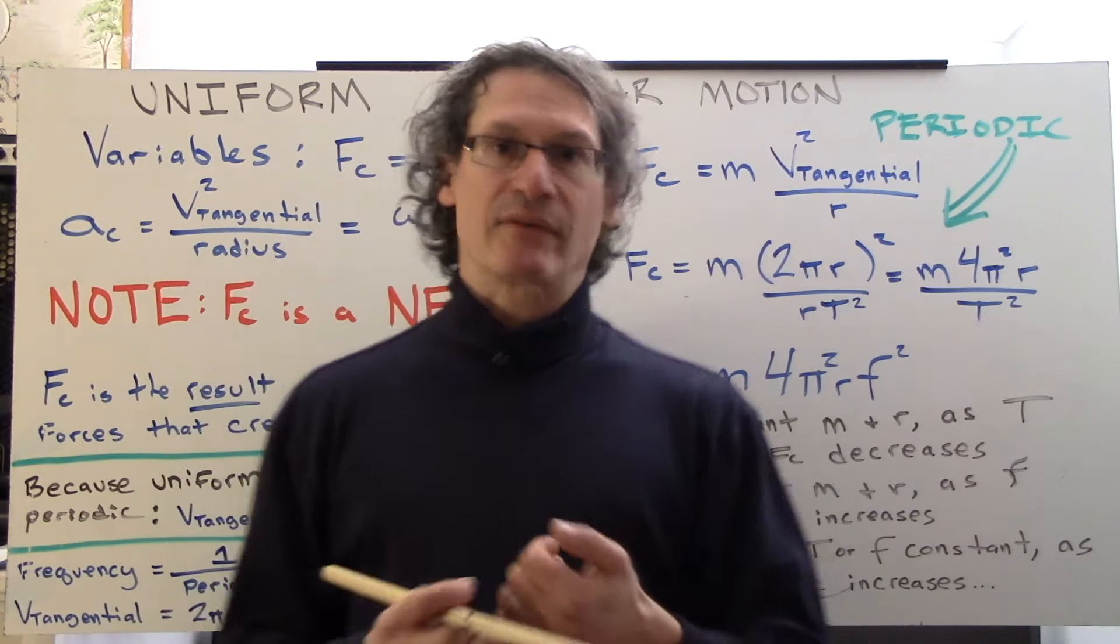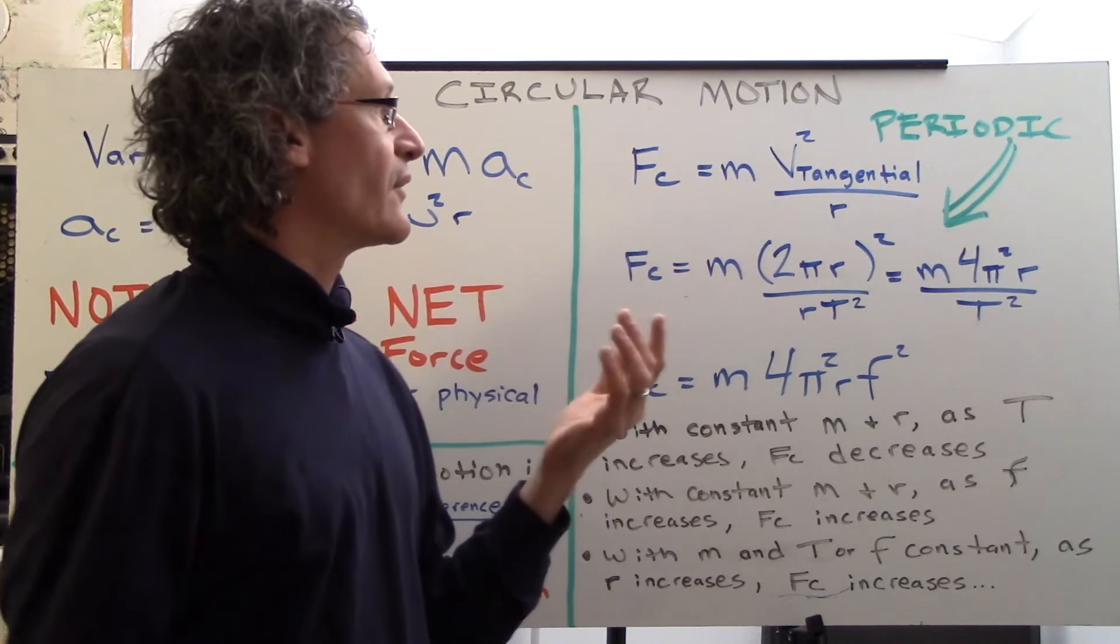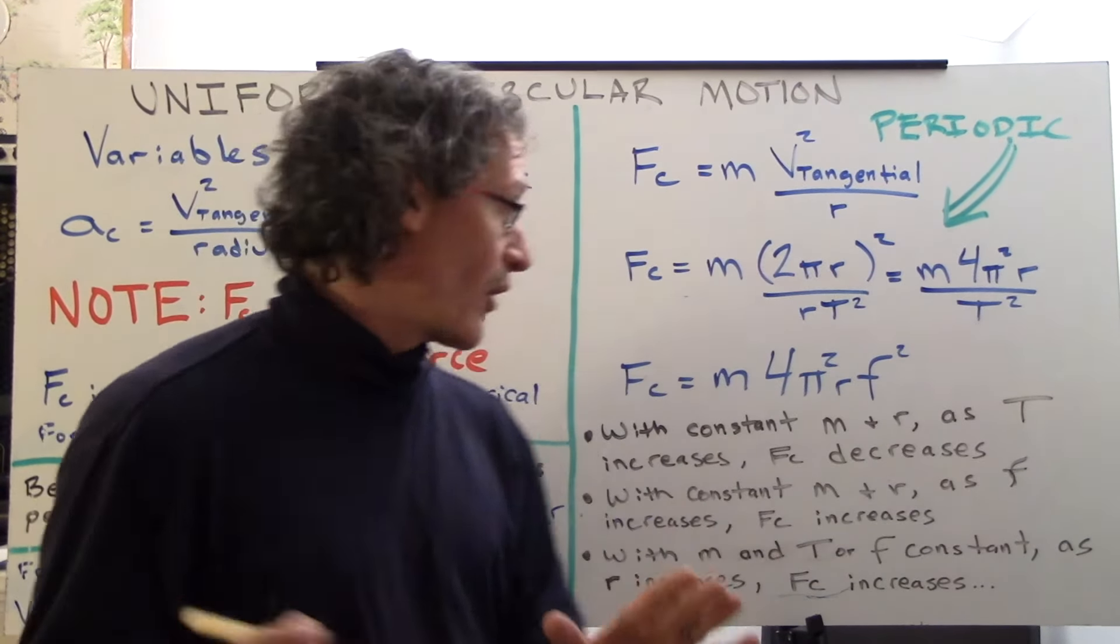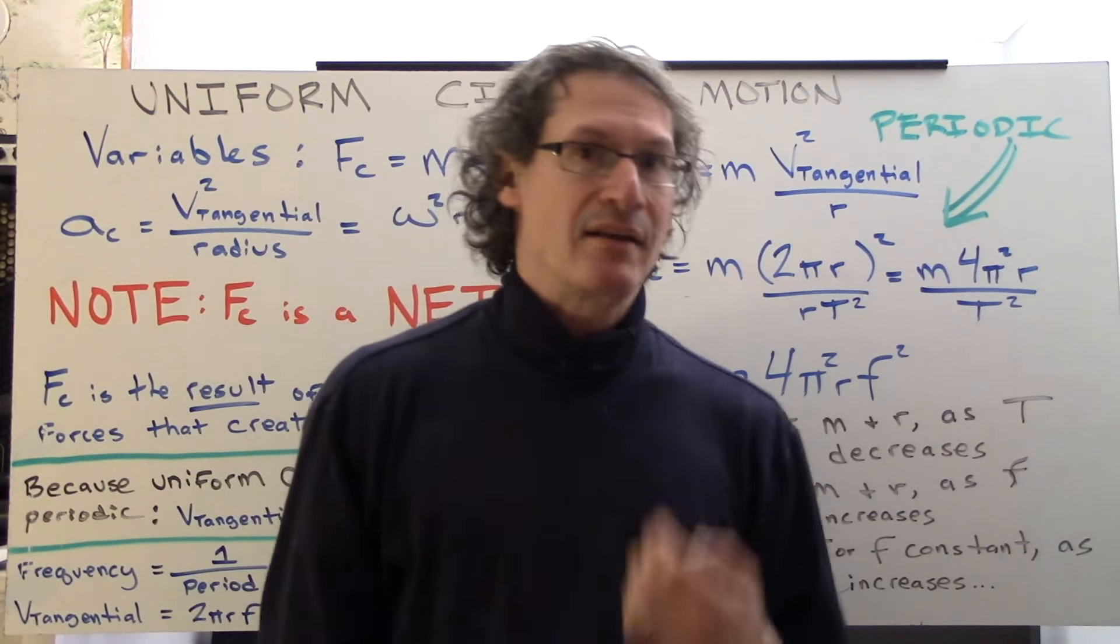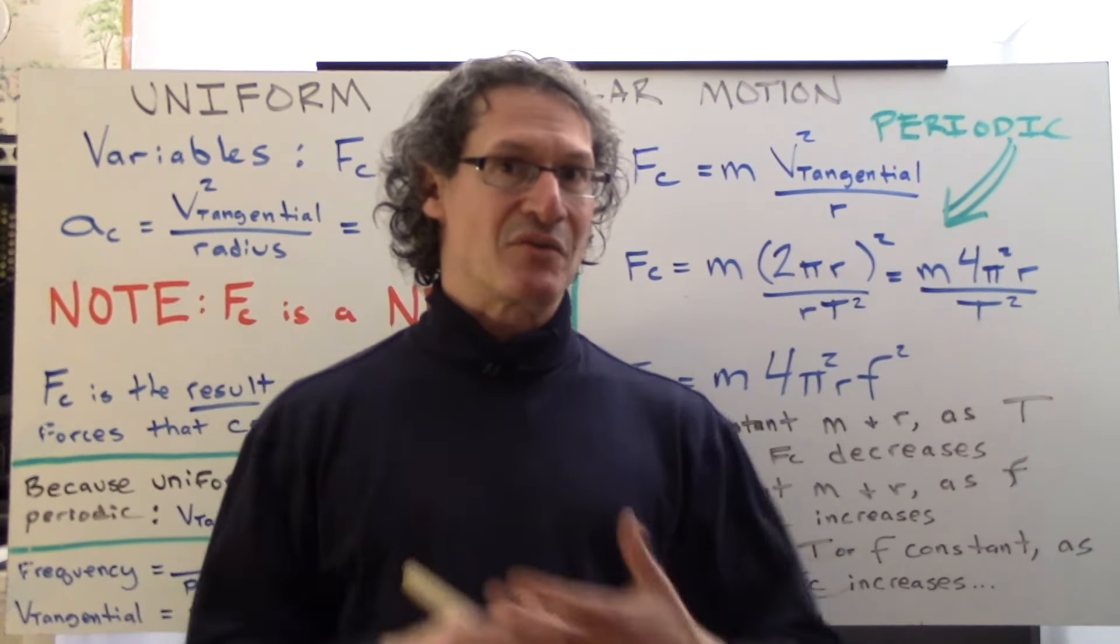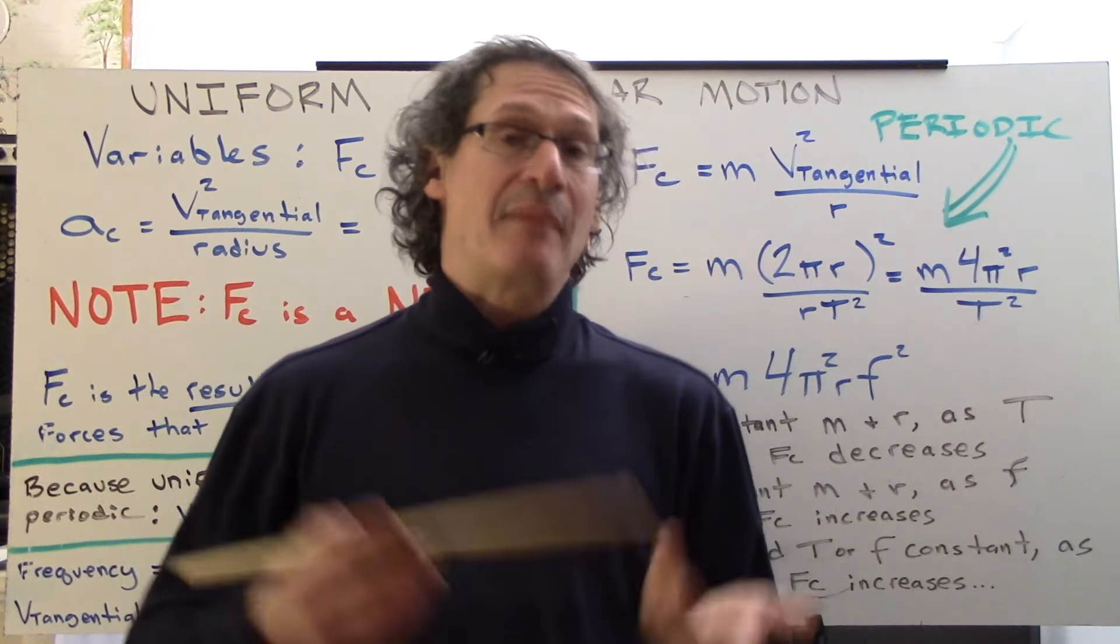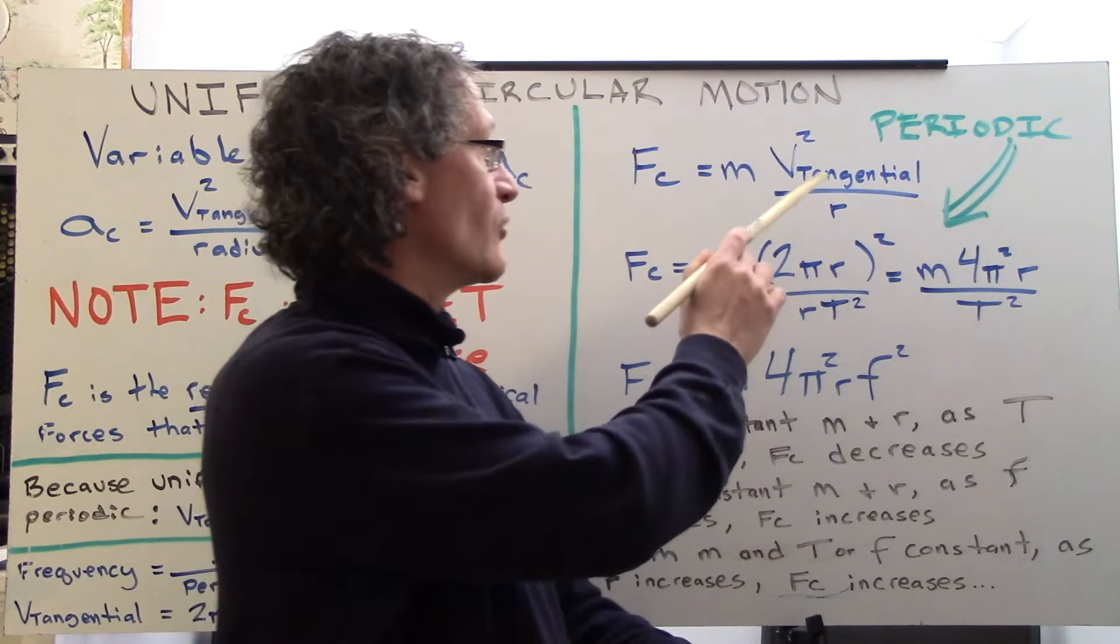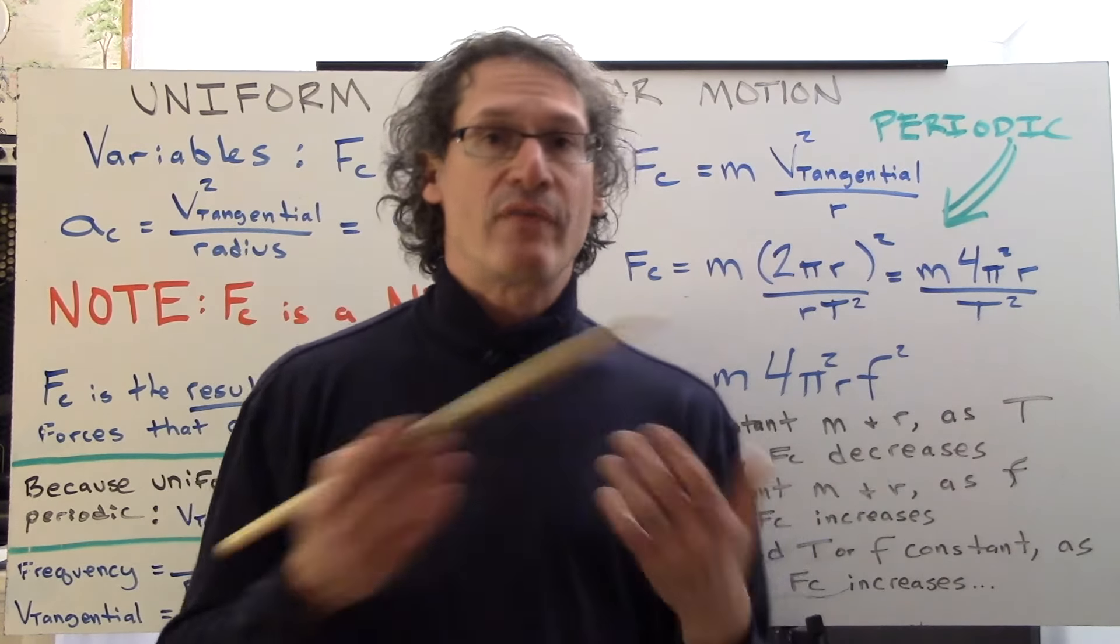Now, that's kind of counterintuitive because if we look, we say, well, wait a minute, radius is in the denominator. Wouldn't this go down? The conditions, though, are keeping frequency or time constant. And if you do that, you're actually, by changing the radius, you're changing the circumference, and therefore your velocity would not be the same. And so that's the thing, v tangential would change if you hold these constant to change the radius. So that's how that occurs.